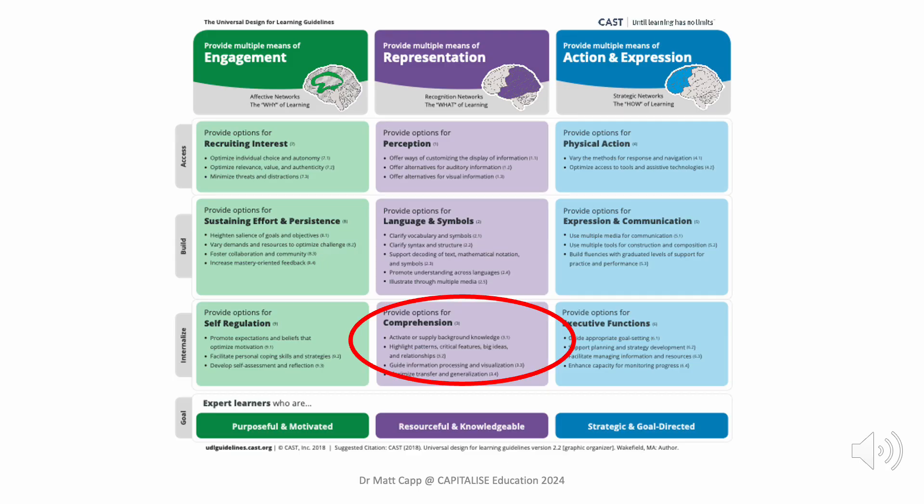Guideline 3 of the UDL Framework reminds teachers that they need to support students with comprehension, but before they can support them with comprehension, they first need to ensure that all kids can physically access the information being taught and the teacher has clarified all language and symbols used within that information.